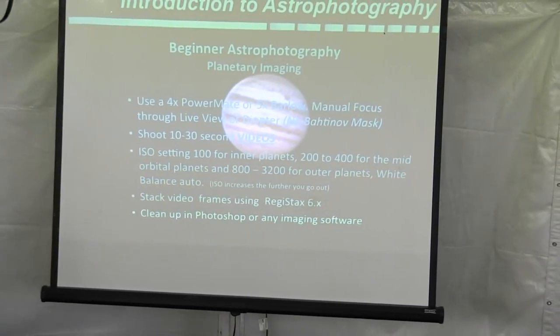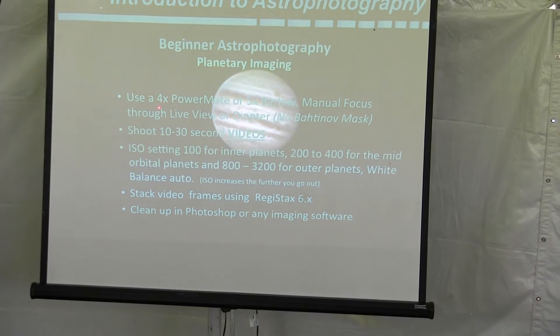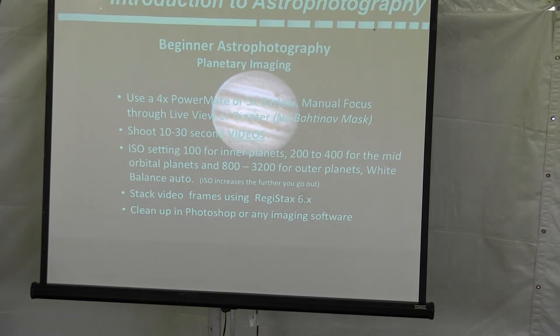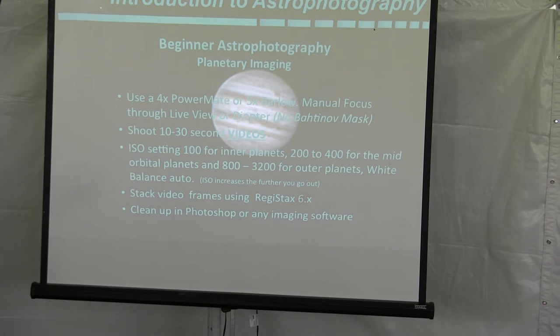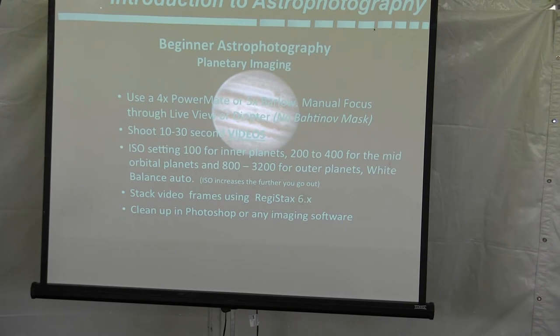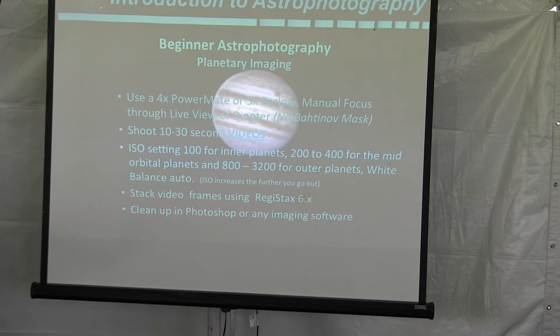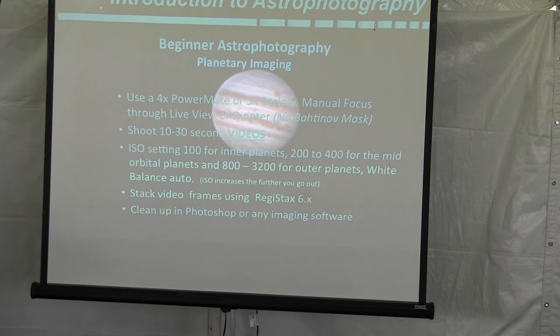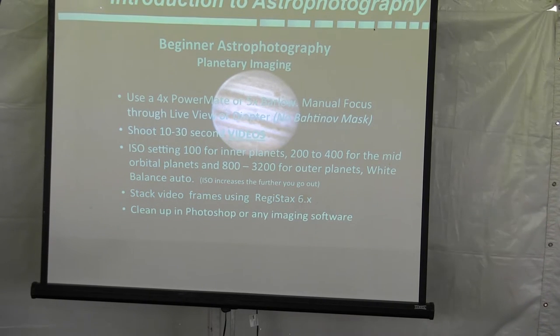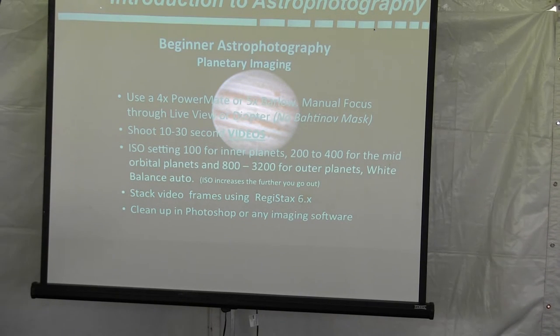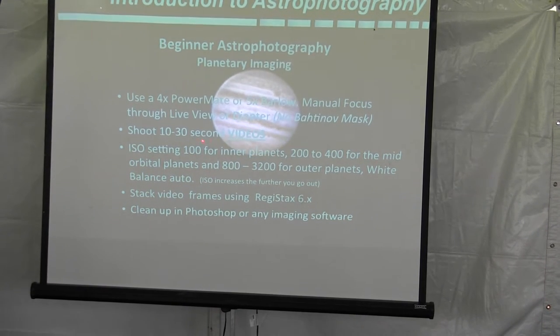If you're going to do planetary imaging, I use a 4X Powermate. It's made by TeleVue. It's a beautiful thing. It's like a Barlow, but without the vignetting. You want to manual focus through a live view mode. You can see your image on the back of your camera and eye focus. You can't use a Bahinov mask, but why even deal with that? You want to focus until your picture is nice and clear on the back of your camera.